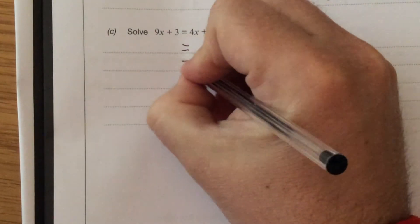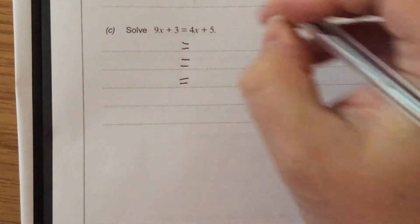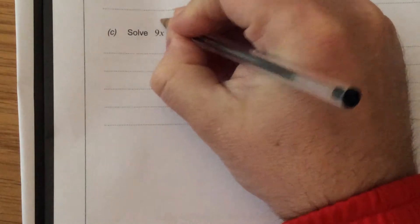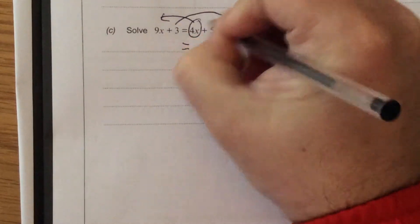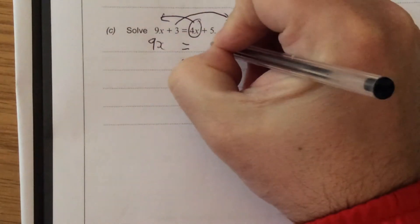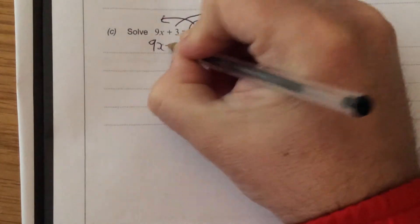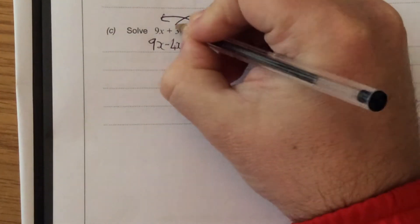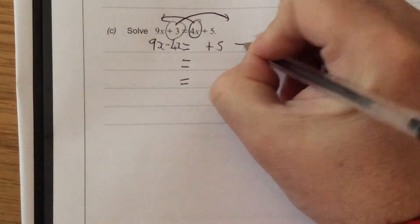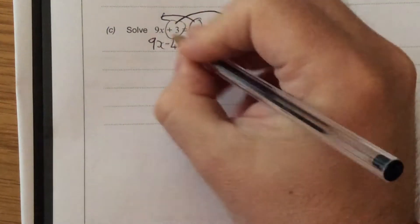Solving equations, we get all the x's on the one side, all the numbers on the other. So what I've got to do, I've got 9x on this side and I've got plus 5 over here, that's plus 4x, so when that goes over it becomes take away 4x. That's plus 3, when that goes over the other side it changes and becomes take away 3.